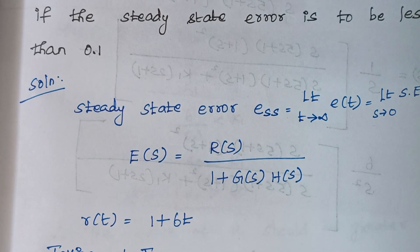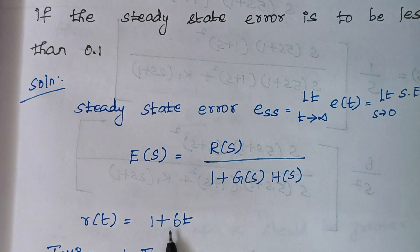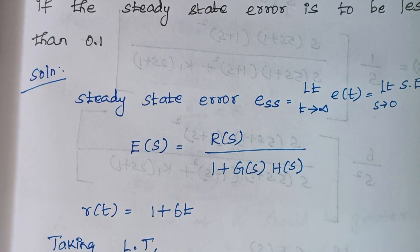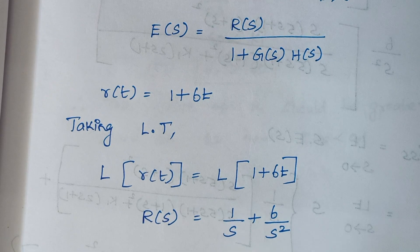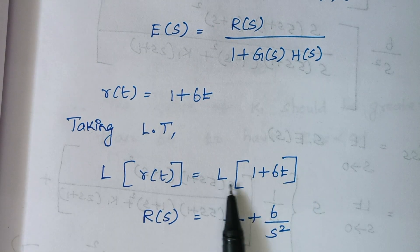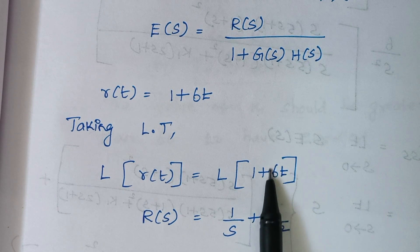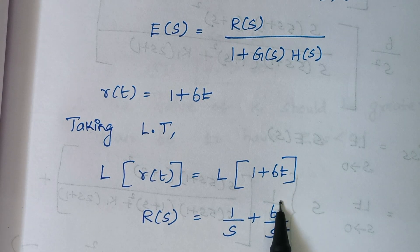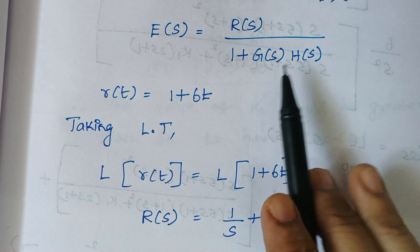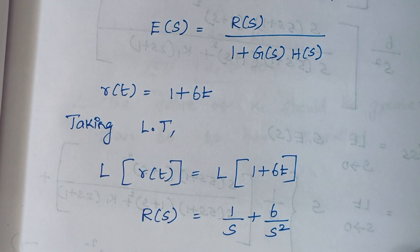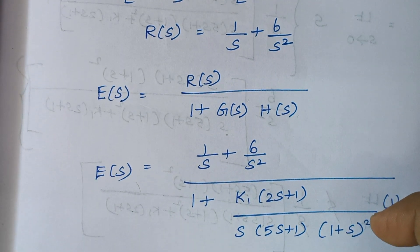The value of r(t) is given, but what we need is R(s), so we take the Laplace transformation. Applying Laplace, R(s) = Laplace of 1 + 6t, which gives 1/s + 6/s². Now we know R(s), G(s), and H(s), so we substitute into the expression for E(s).